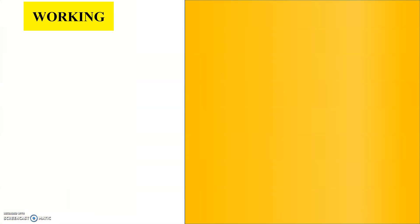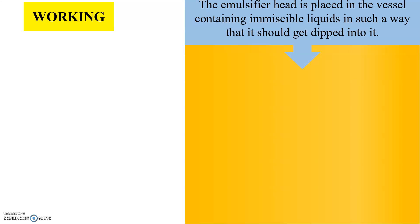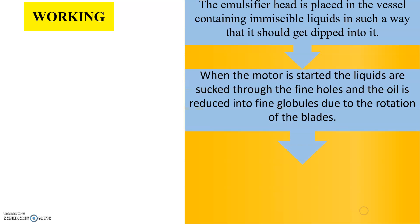Now let us see the working of Silverson Mixer Homogenizer. The first step is the emulsifier head is placed in the vessel containing immiscible liquids in such a way that it should get dipped into it. Next step is when the motor is started, the liquids are sucked through the fine holes and the oil is reduced into fine globules due to the rotation of the blades.